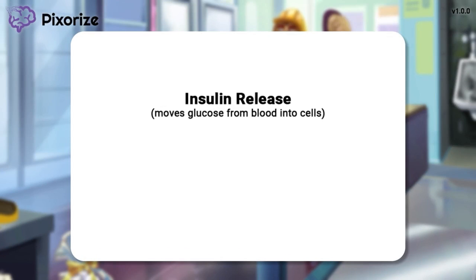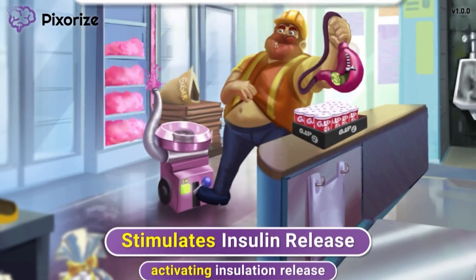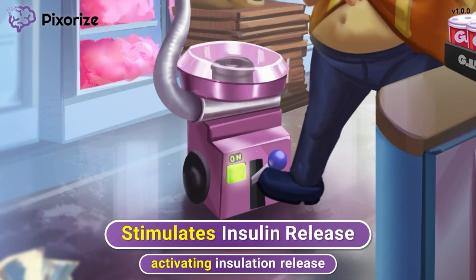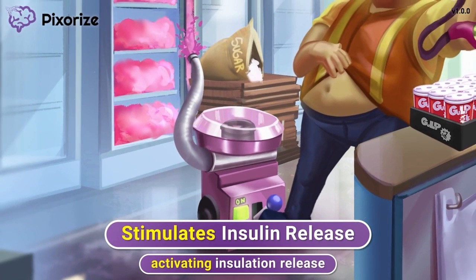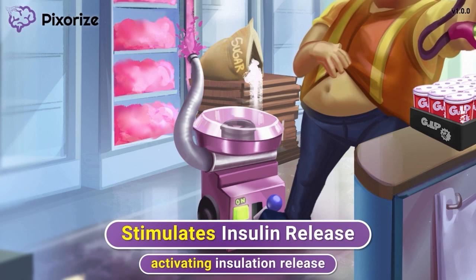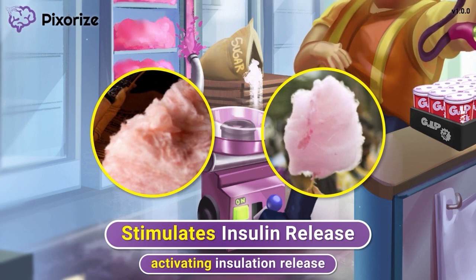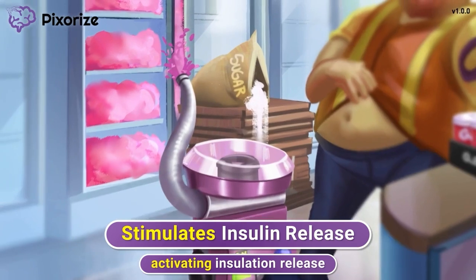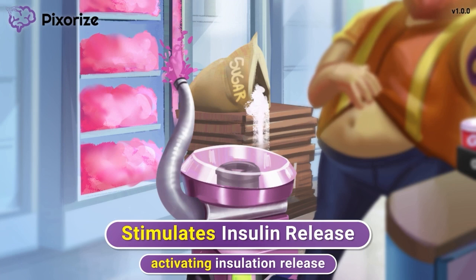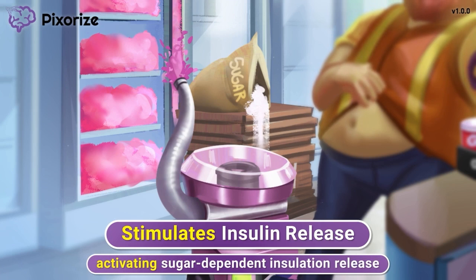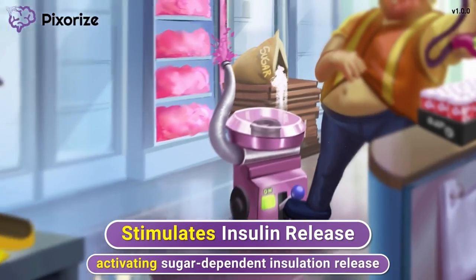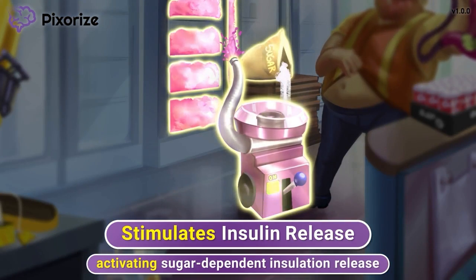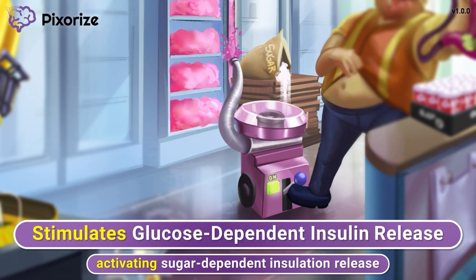The action of this released insulin moves glucose from blood into cells, reducing blood glucose levels to treat diabetes. This machine is unusual in that it requires the worker to put sugar inside to make the insulation — you know how sugar can be turned into cotton candy, which kind of looks like insulation. Notice specifically how the sugar is falling into the insulation machine. This sugar-dependent insulation release should help you remember glucose-dependent insulin release.